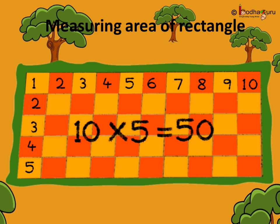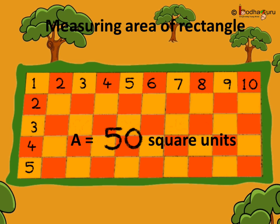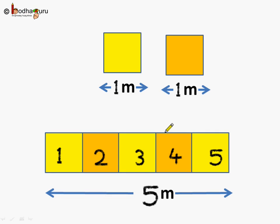We don't know the unit right now. So we can say the area is equal to 50 square units, where unit could be anything — meter, centimeter, kilometer, etc. Now, suppose each side of the square tile we are using for measuring is equal to 1 meter. Since it is a square, it means all the sides are equal to 1 meter.